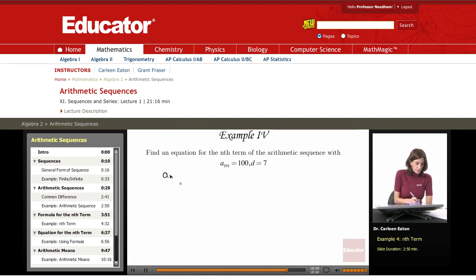To figure out this equation for the nth term, I need the first term. So I have the common difference, but the thing that's missing here is the first term. So how do I figure that out?